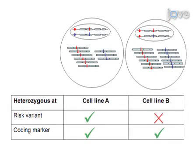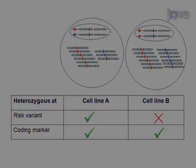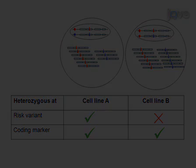The cells used for this assay should express the gene of interest as well as meet two fundamental genotypic requirements. They have to be heterozygous for both the DNA sequences.